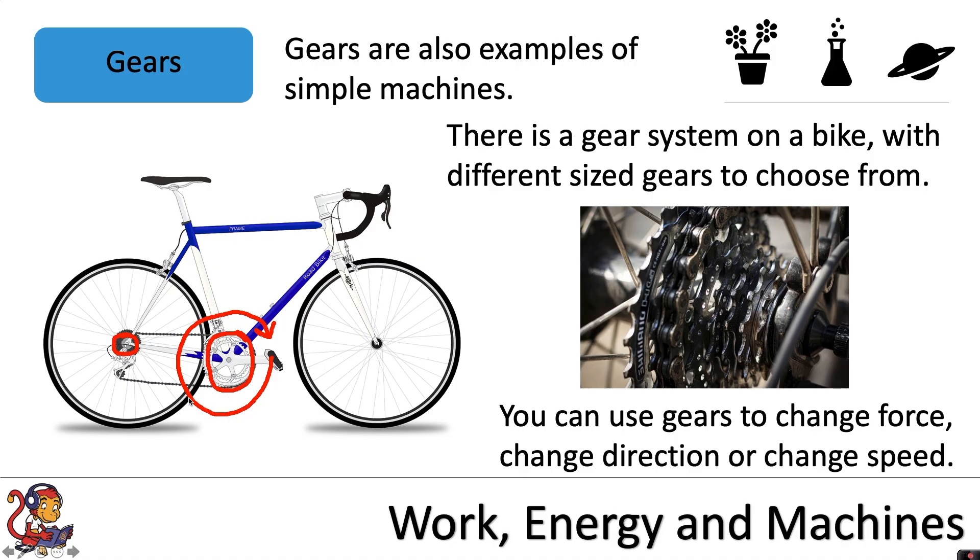However, because you have a larger gear at the front that you've rotated fully once and a much smaller gear at the back, it could mean, for example, that for every rotation of the pedals, the back wheel might actually move around three or four times.